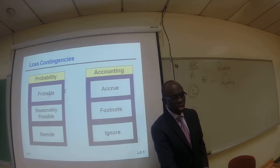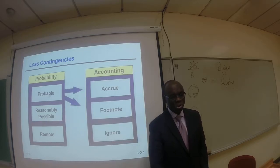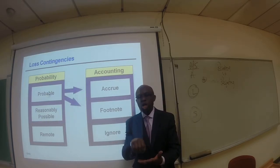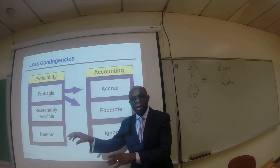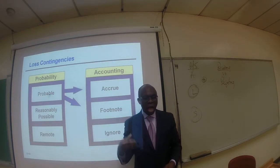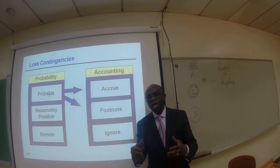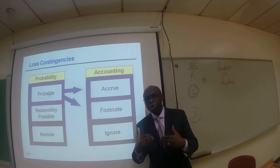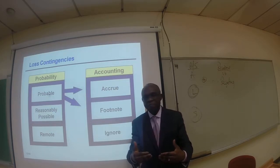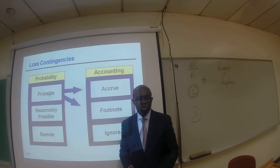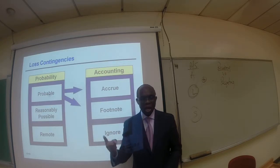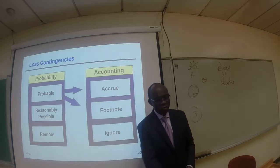In such a circumstance, we accrue — meaning we record it in our journal and post to the ledger. In addition to recording and reporting it in our financial statement, we also include it as part of our note disclosures. So we accrue and we have footnotes.